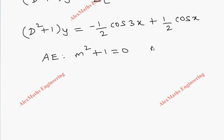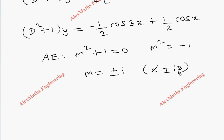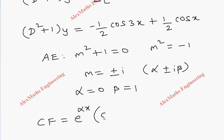Now for the auxiliary equation, we have m² + 1 = 0, so m² = minus 1, and m equals plus or minus the square root of minus 1, which is ±i. This is of the form alpha plus or minus i·beta, where alpha is 0 and beta is 1.